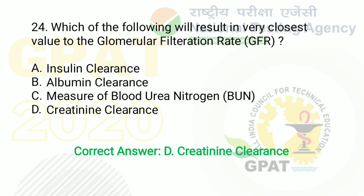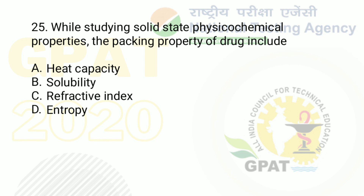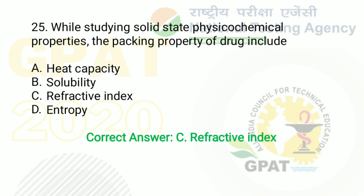Moving to the last question of this presentation: while studying solid-state physicochemical properties, the packing property of a drug includes. Option A: heat capacity. Option B: solubility. Option C: refractive index. Option D: entropy. The right answer is option C — refractive index.